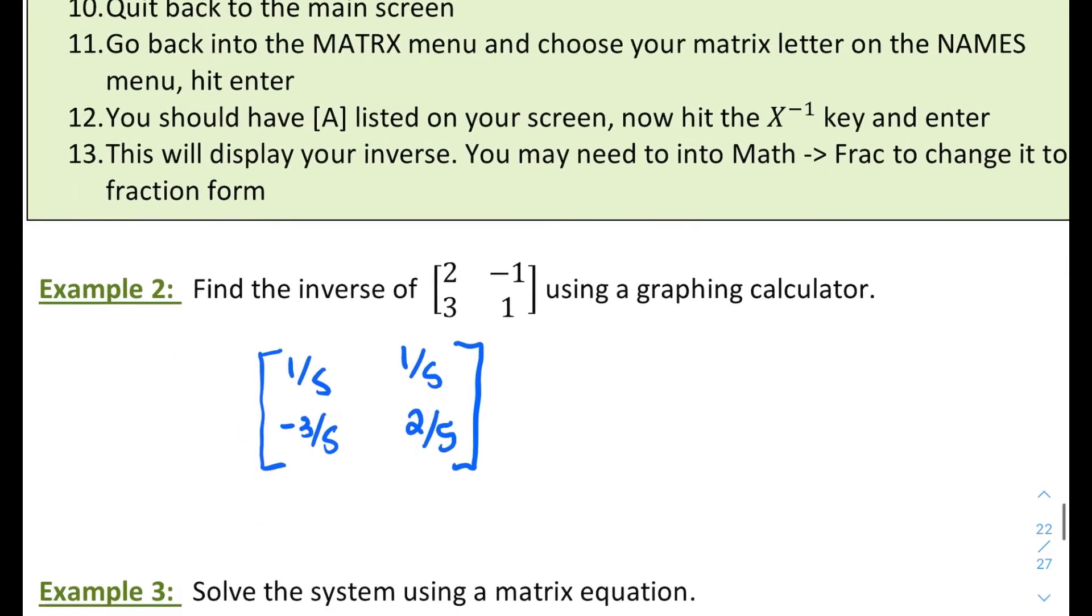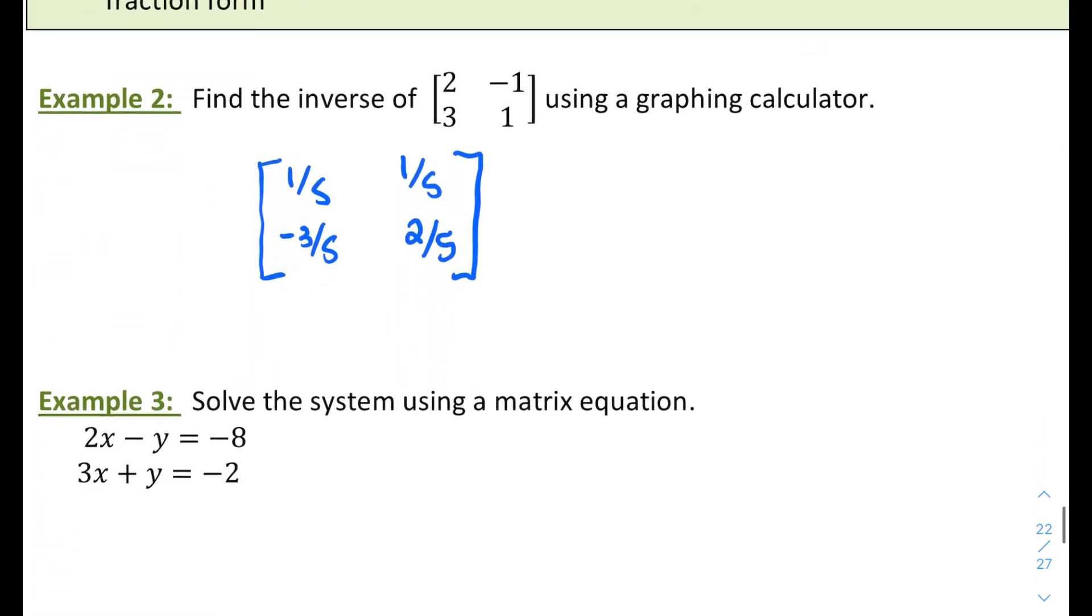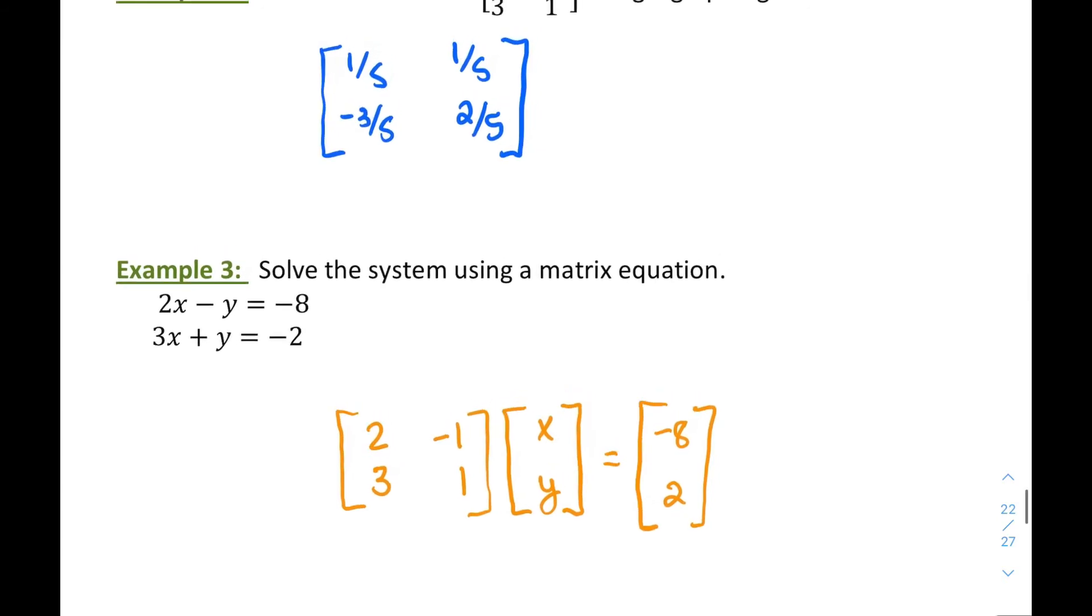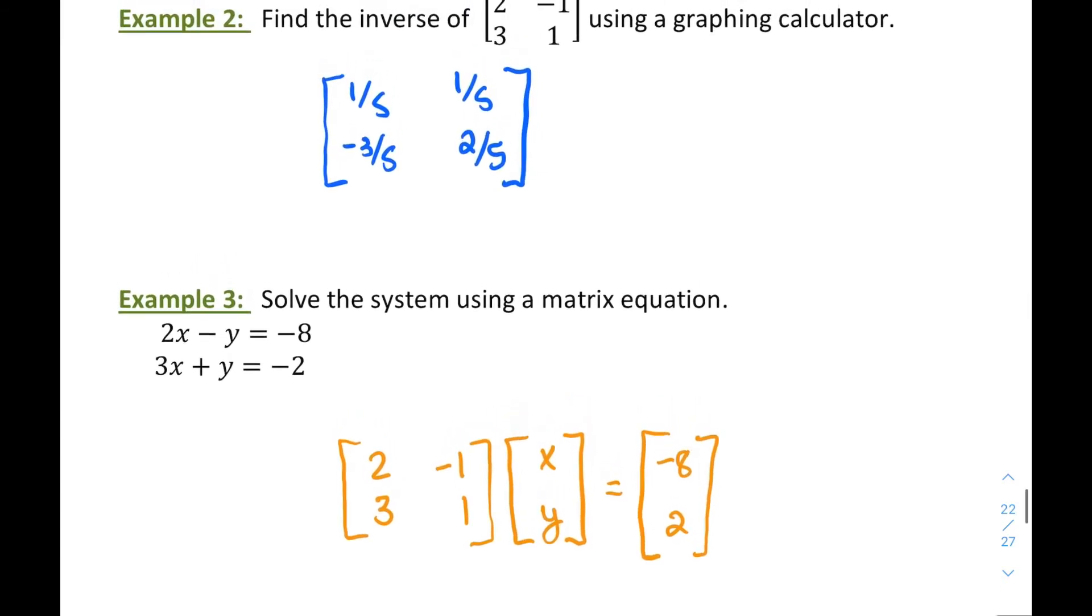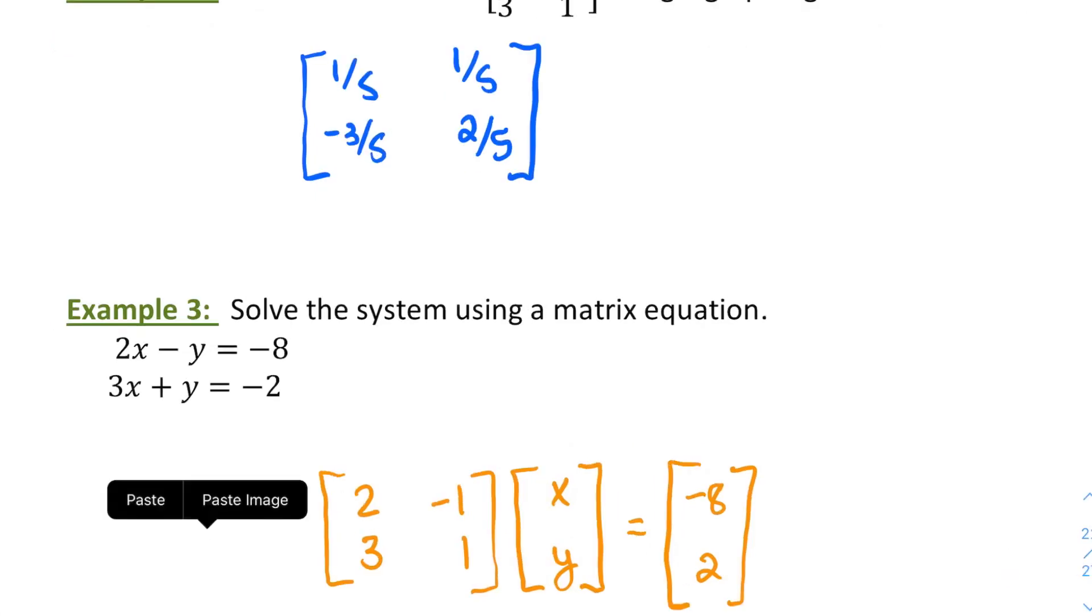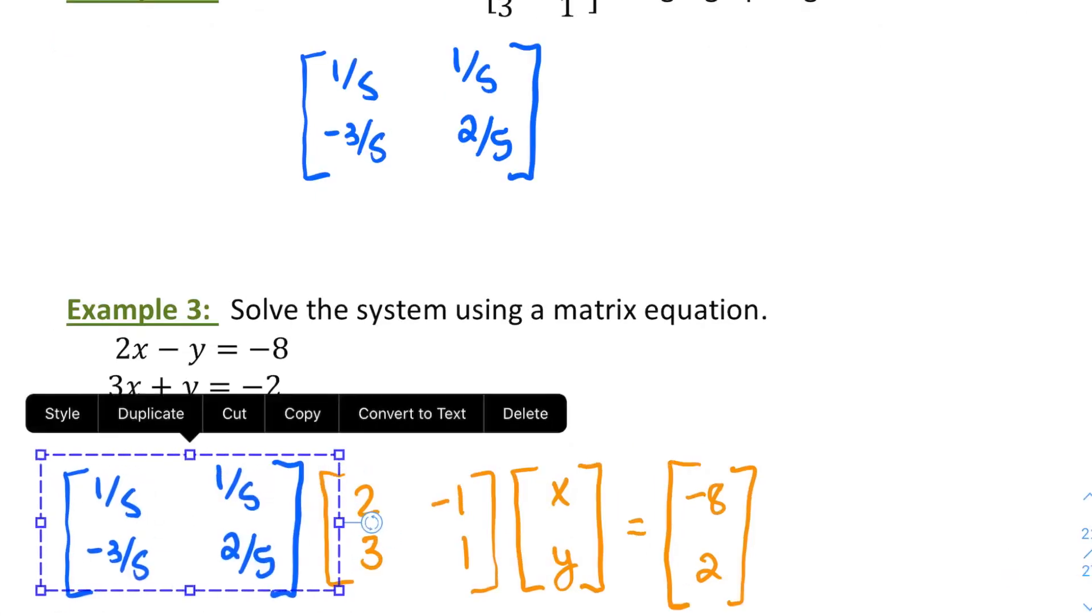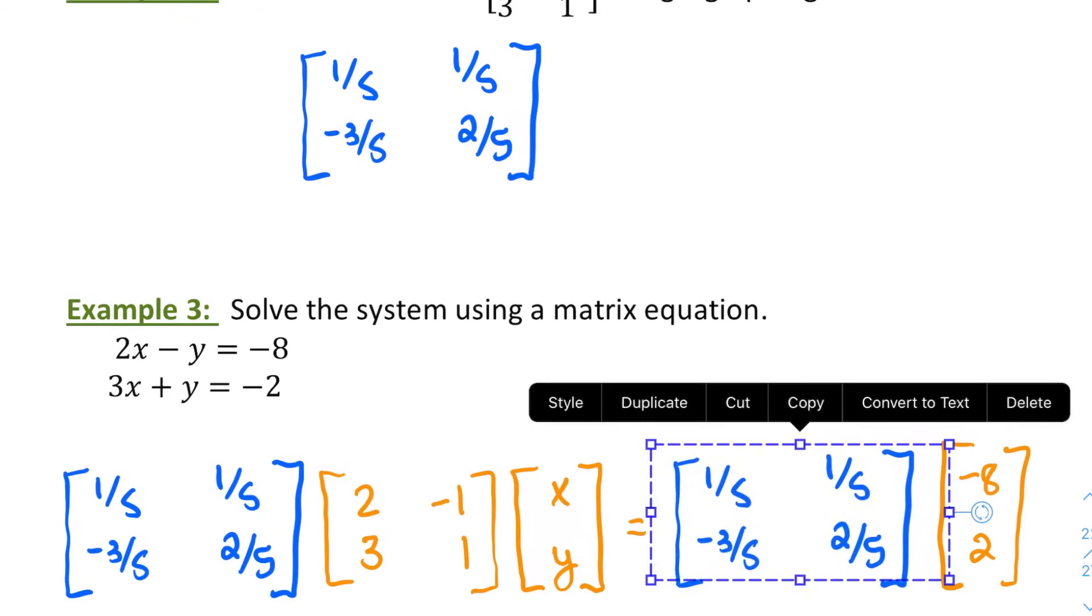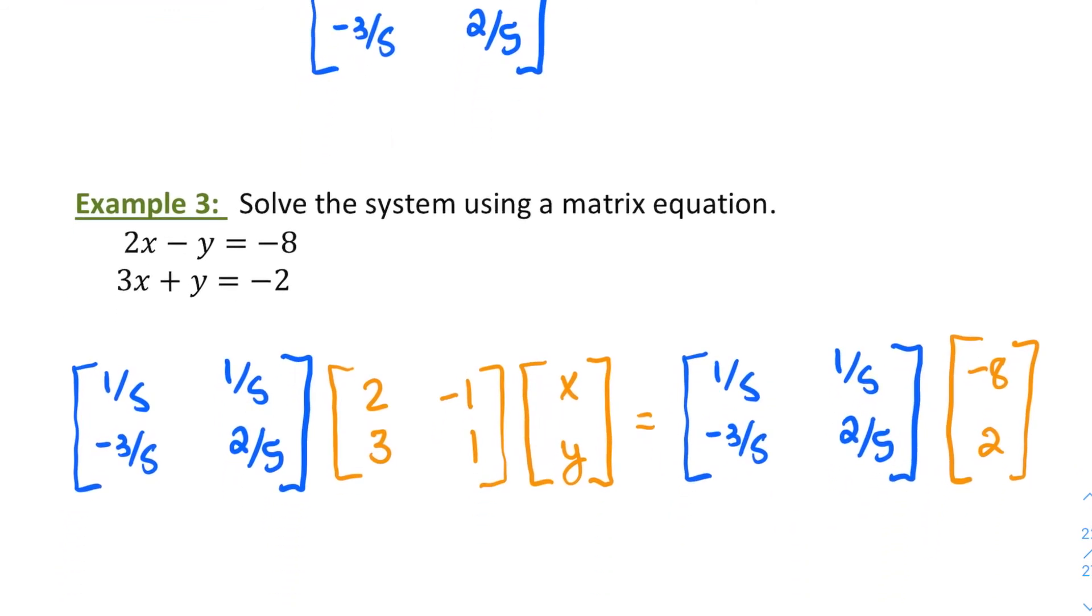So now that I've got the inverse of that matrix, I'm going to use it to solve the system of equations that we had in our first example. So I went ahead and copied the matrix equation that represents that system that we came up with earlier. Now, I would normally need to find the inverse of my coefficient matrix, but I actually just did that one in my previous example.